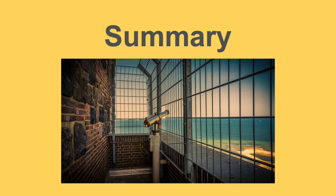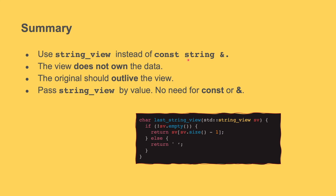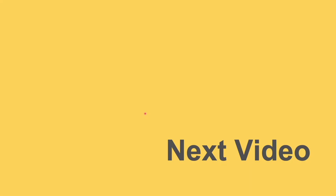Let's quickly summarize what we learned about string view. As a general rule of thumb, use string view instead of const string or a constant reference to a string, when you want to pass a parameter that you don't want to change and you don't want to take ownership of. Remember that the view does not own the data and the original should outlive the view, so make sure you don't have dangling views. Lastly, notice that all over this video we pass string view by value — we don't use const in front of it or a reference. Because it's just a very thin wrapper with a pointer and a size, you don't need to pass it by reference. And because it's just a view to the original, you cannot change the original, so you don't need to put const in front of it. Thank you for watching. I hope this was useful. Please let me know in the comments if you have any questions, like this video, and subscribe to my channel.